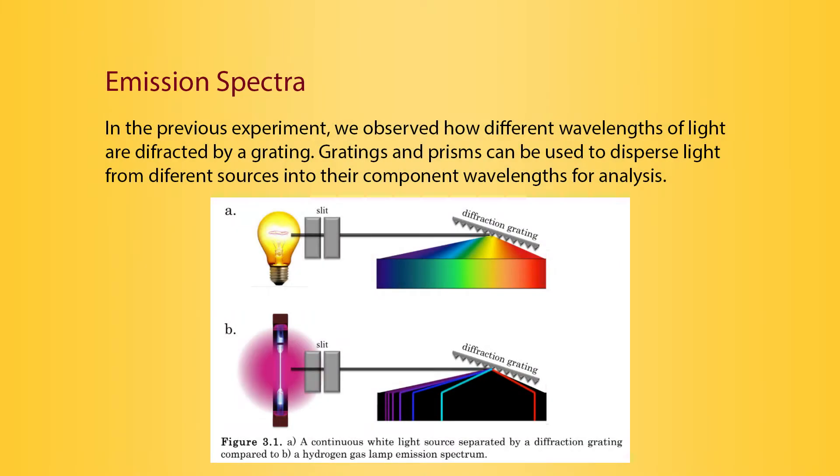In the previous experiment, we observed how different wavelengths of light are diffracted by a grating. Gratings and prisms can be used to disperse light from different sources into their component wavelengths for analysis.